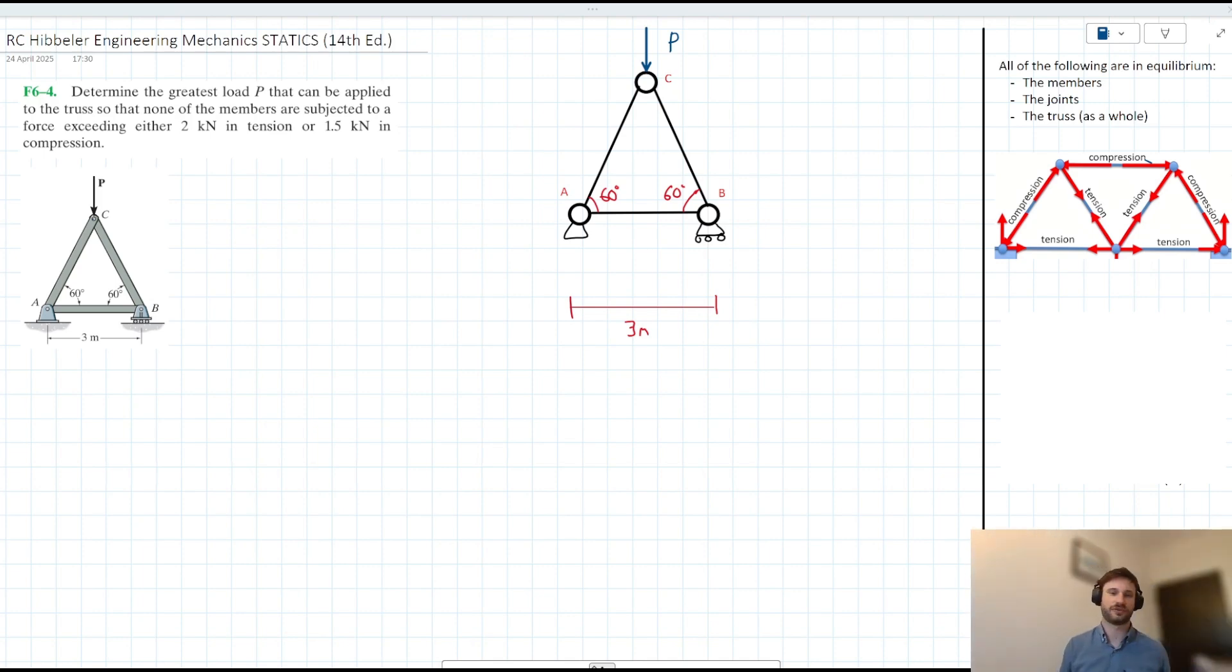All right, so hello and welcome to this video tutorial for R.C. Hibbeler and the Statics textbook. So we have this problem from chapter six here that's asking us to determine the greatest load P that can be applied to the truss so that none of the members are subjected to a force exceeding either two kilonewtons in tension or 1.5 kilonewtons in compression. So I've kind of replicated this diagram we have here in my own writing so that we can kind of make an absolute mess of it.